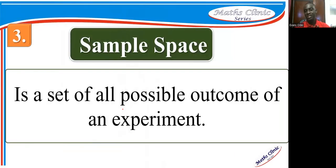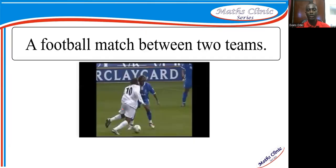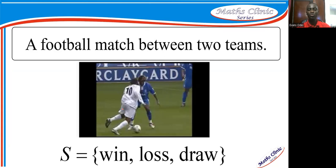If I throw a die once, that is one trial. Toss a coin once — that is a trial. Toss it twice — two trials, and so on. The next term is sample space, defined as all possible outcomes of an experiment. For a football match between two teams, the possible outcomes are: team A wins, team B wins, or it's a draw — so the sample space has three outcomes: win, lose, or draw.